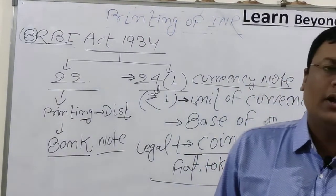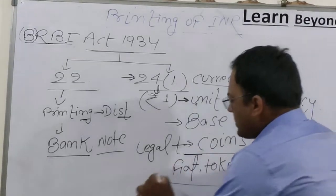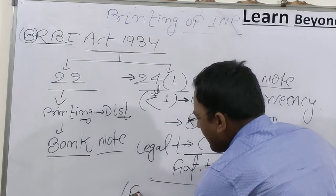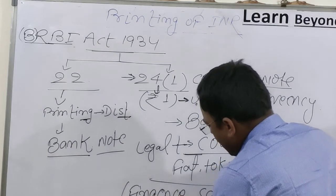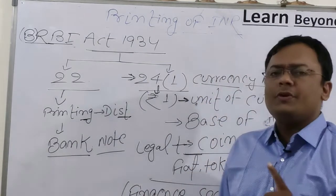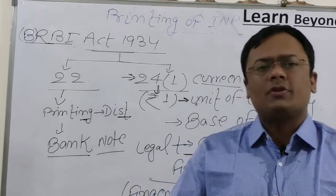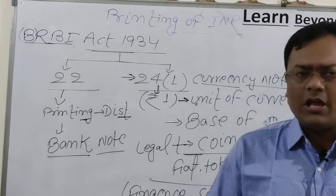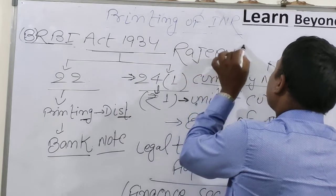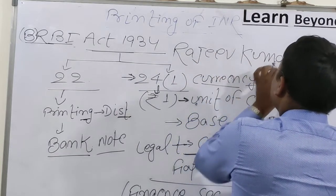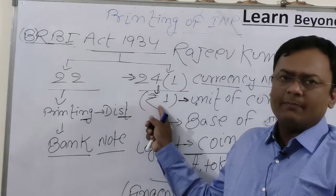All bank notes are duly signed by the Governor of Reserve Bank of India — all notes except the one rupee note. The one rupee note is signed by the Finance Secretary, not the Governor of RBI. Always remember that the Finance Secretary signs the one rupee note. At present, the Finance Secretary of India is Rajeev Kumar, who is an IES officer.